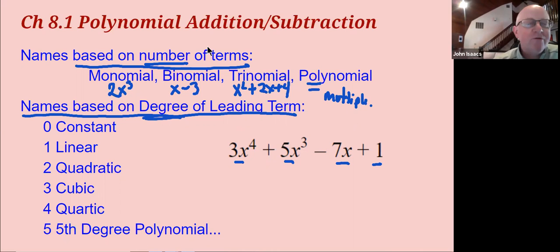And a 4 or 5 or 6 or 7 term polynomial, a polynomial. But if you're on a quiz or test and you see a binomial, you're supposed to call that a binomial. Even though a binomial is a polynomial, just like a square is a rectangle, you're going to be more specific.